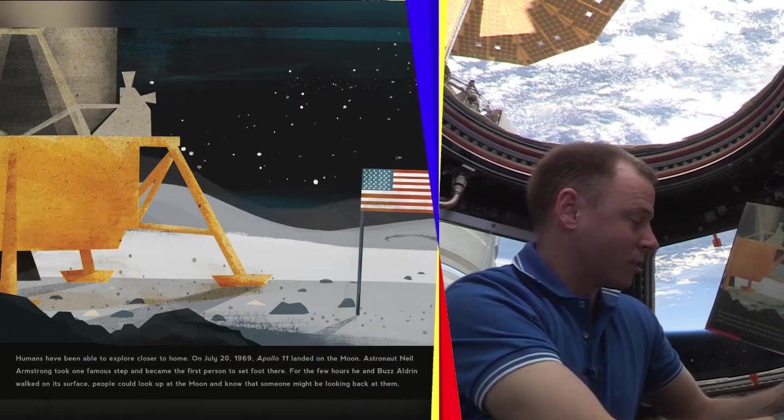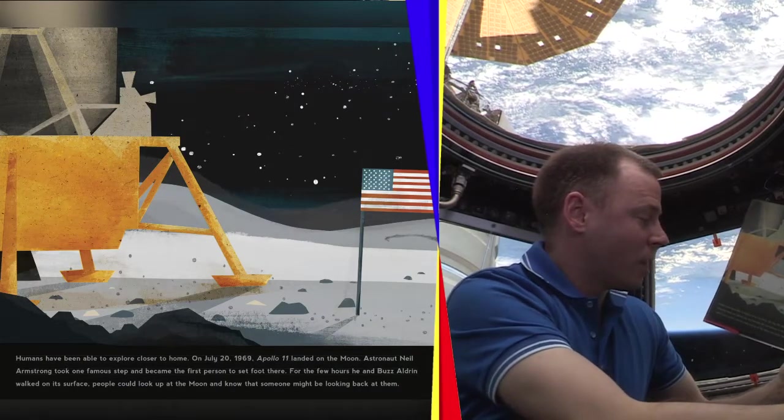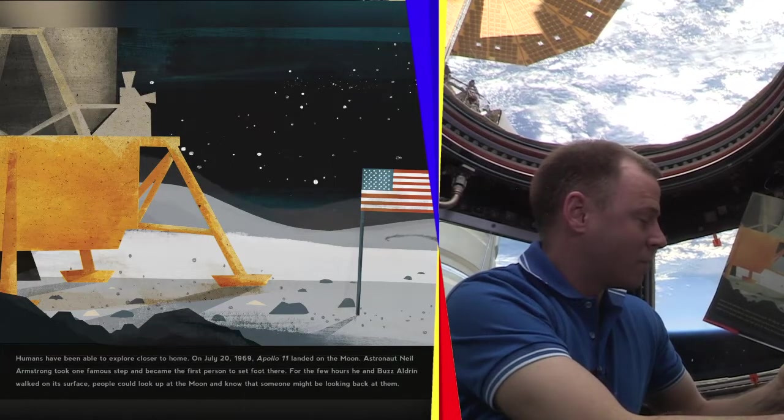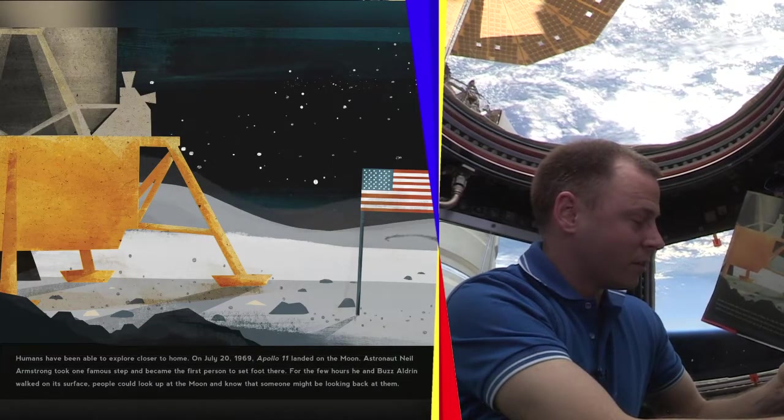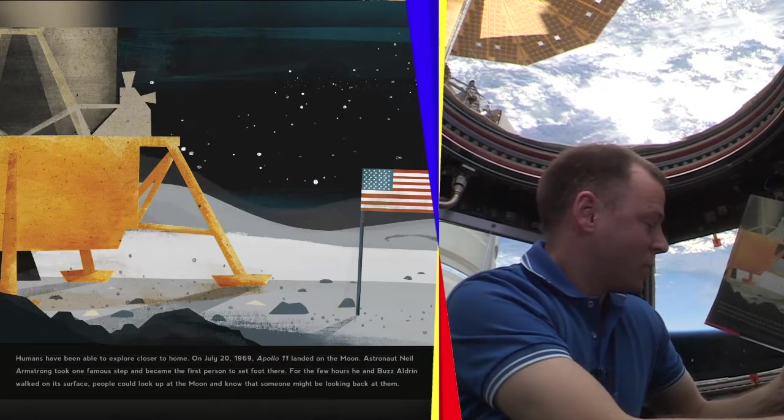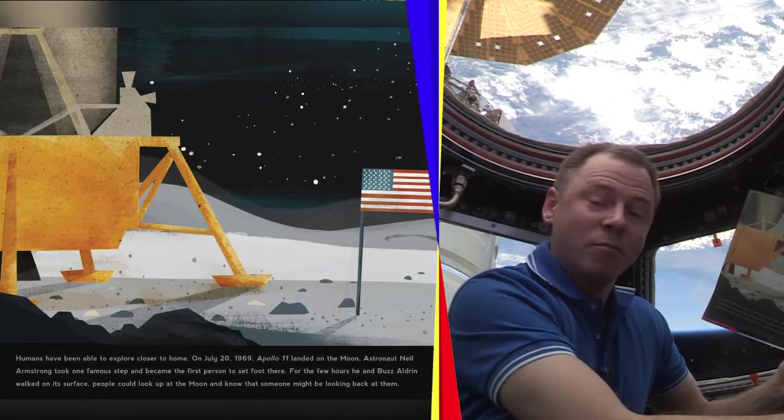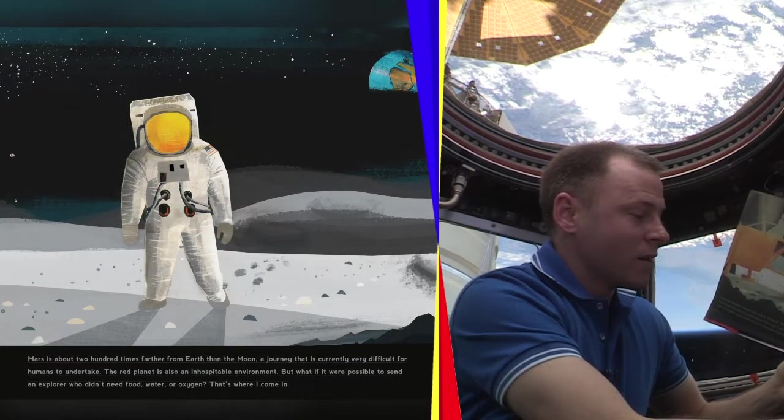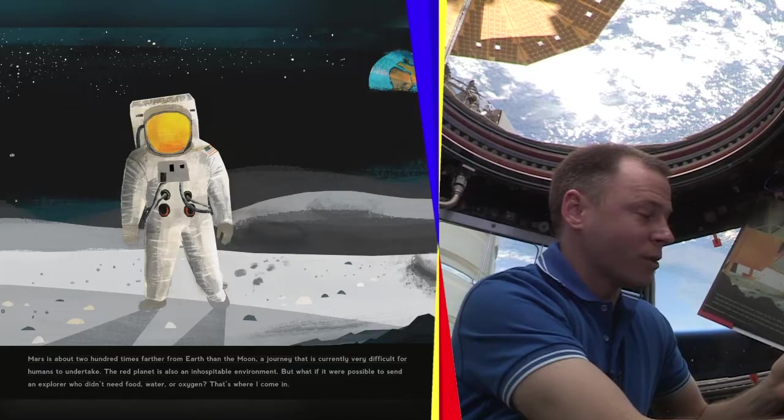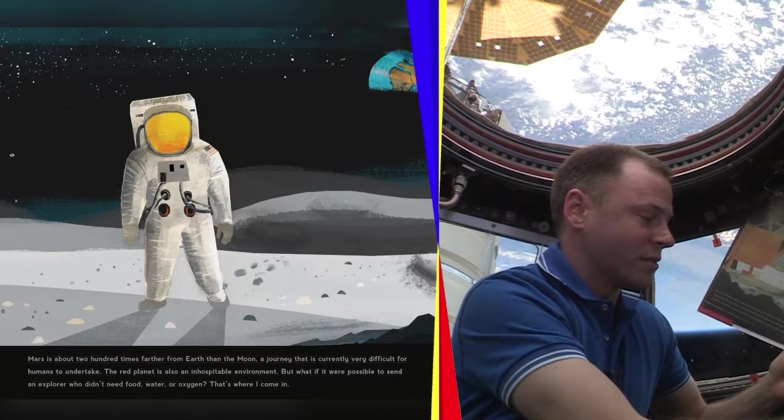Humans have been able to explore closer to home. On July 20, 1969, Apollo 11 landed on the moon, and Neil Armstrong took one famous step and became the first person to set foot there. For the few hours that he and Buzz Aldrin walked on its surface, people could look up at the moon and know that someone might be looking back at them. Mars is about 200 times farther from Earth than the moon. A journey that is currently very difficult for humans to undertake.